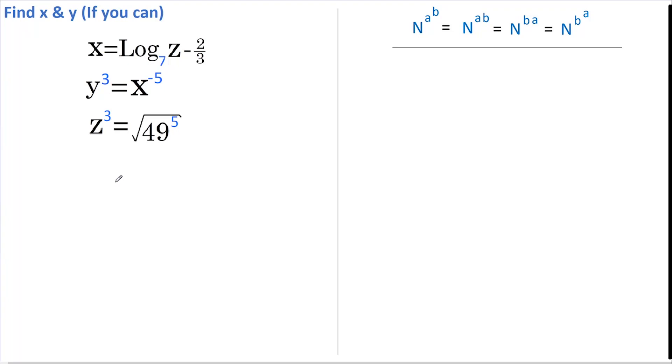Hi, welcome back. Today I'm going to attempt to solve these horrid looking equations. Okay, let's begin with Z, or Z to the power of 3 equals 49 to the power of 5.